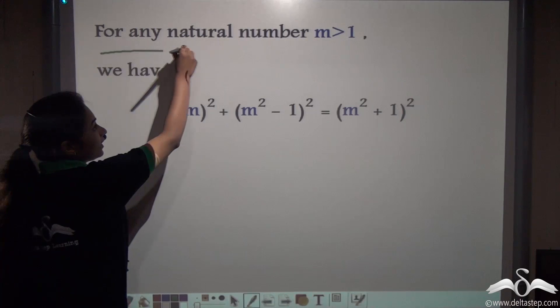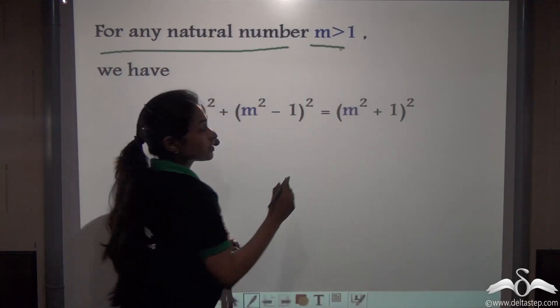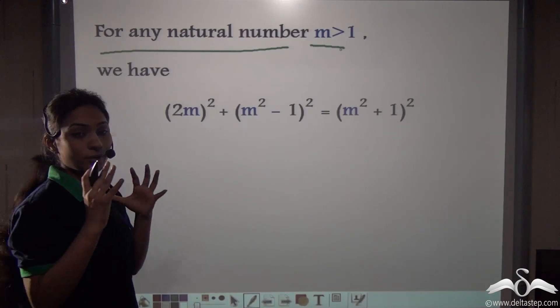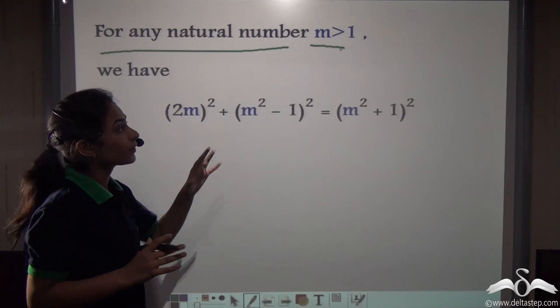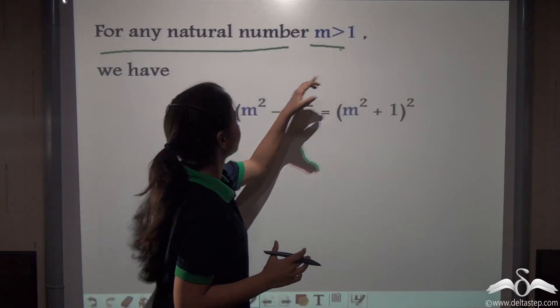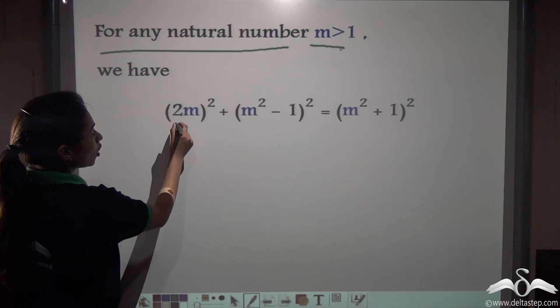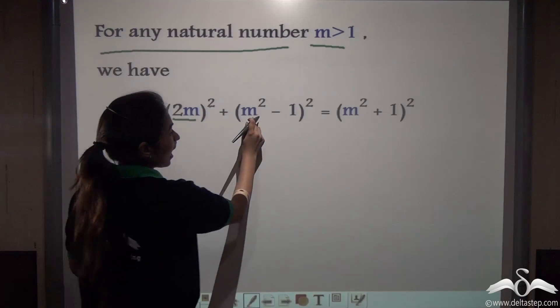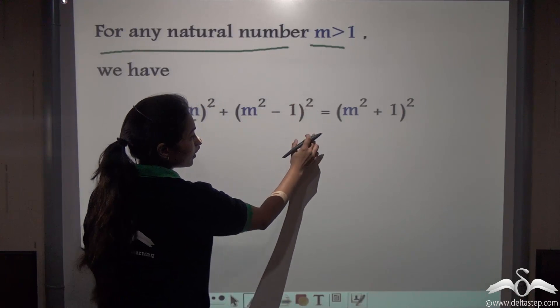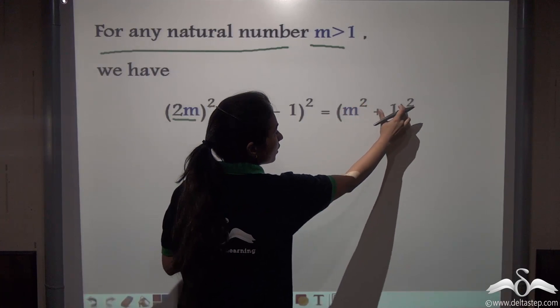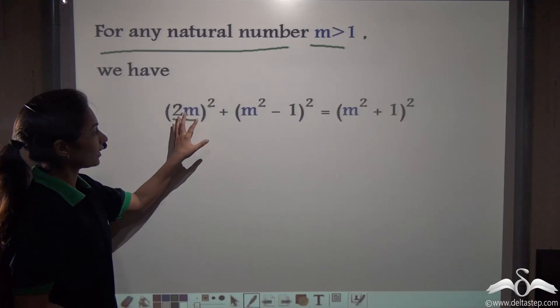See, for any natural number m that is greater than 1, we are taking a natural number m and it should be greater than 1. Then this relation holds true. What is this relation? 2m whole squared plus m squared minus 1 whole squared gives us m squared plus 1 whole squared. See, we are getting, if this is a number m,